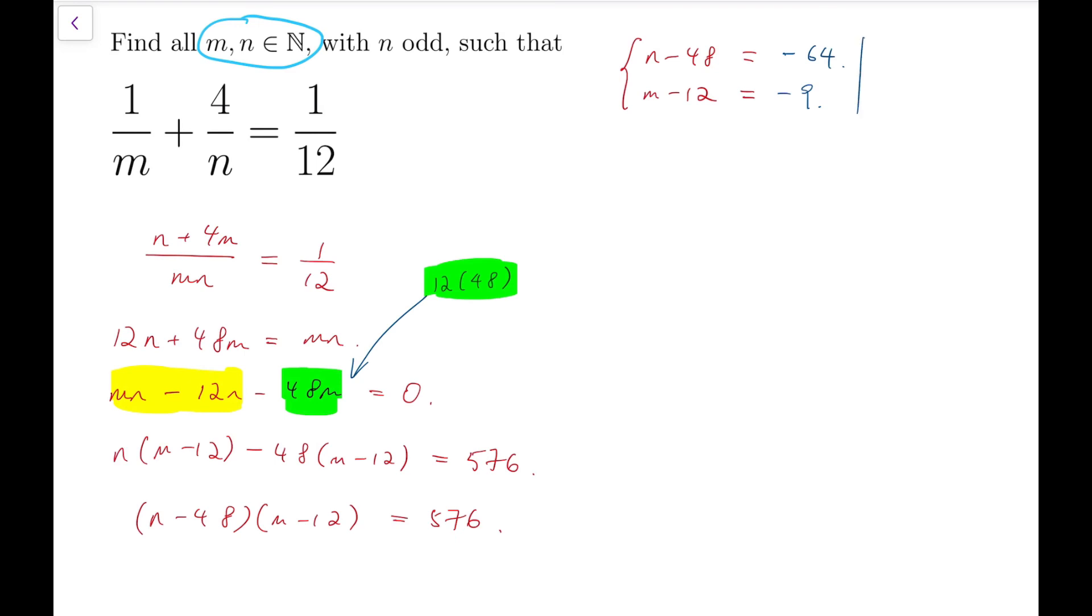Or, if I try to fix n to be positive, make sure that n is positive, and maybe say I choose n minus 48 to be equal to minus 36.